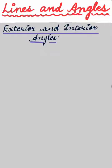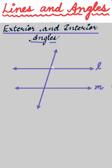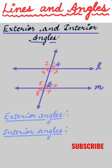Today we will do exterior and interior angles. Let a transversal line t intersect two lines l and m at two distinct points a and b, forming eight angles.